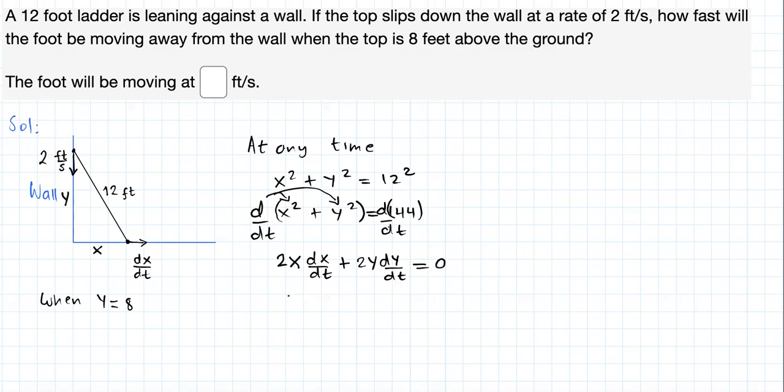Okay, now let's replace what we have and let's find out what we don't have. Twice x here. x I don't have. I'm going to leave a space here. dx dt is precisely what we will find out, right? Plus twice y. y we have is 8. 8 feet plus 8.